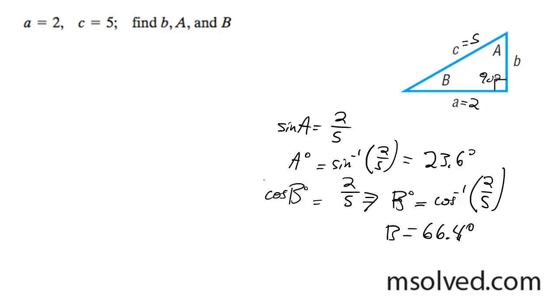Now to solve for side b, I'll use the Pythagorean theorem. b squared equals c squared minus a squared, so b squared equals 25 minus 4, which equals 21. b equals the square root of 21, approximately 4.58.